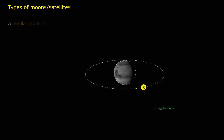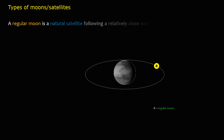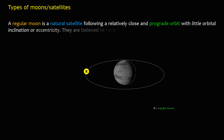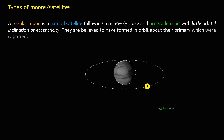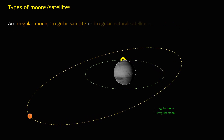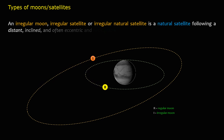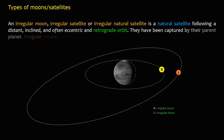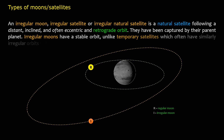A regular moon is a natural satellite following a relatively close and prograde orbit with little orbital inclination or eccentricity; they are believed to have formed in orbit about their primary. An irregular moon, or irregular satellite, is a natural satellite following a distant, inclined, and often eccentric or retrograde orbit. Irregular moons have been captured by their parent planet and have a stable orbit, unlike temporary satellites which often have similarly irregular orbits but will eventually depart.